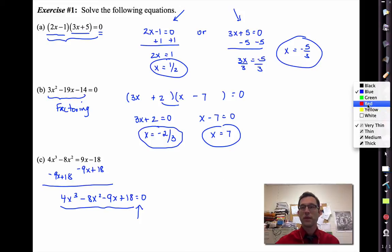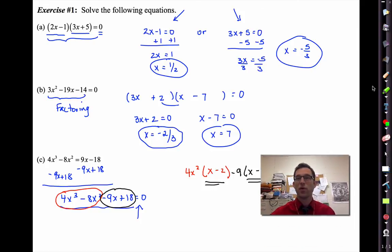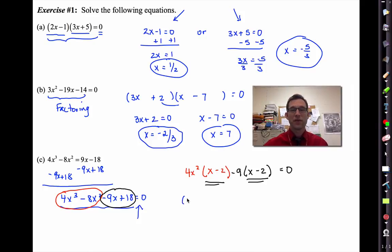With the first two terms, I'm going to factor out a 4x squared, leaving x minus 2. If factoring by grouping is going to work, I have to have an x minus 2 in the second group. So if I factor out a negative 9, then I'll have that x minus 2 that I need. We now see that x minus 2 is in both of them, so I'm going to factor it out, leaving 4x squared minus 9 equals 0.